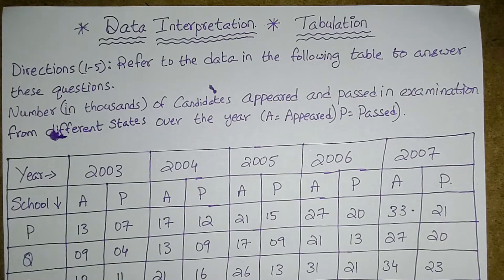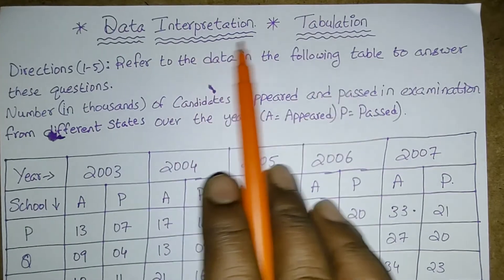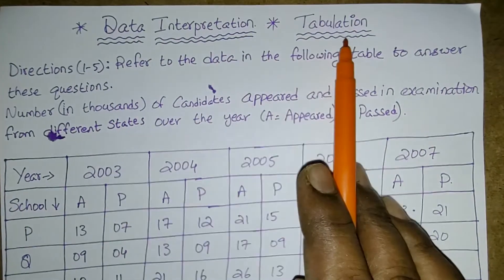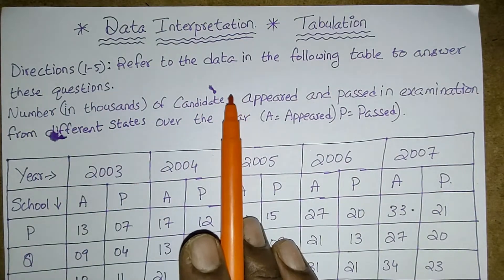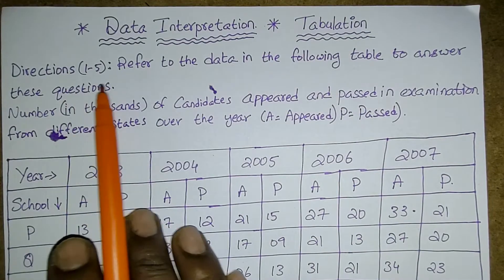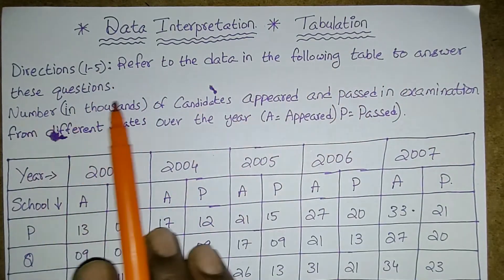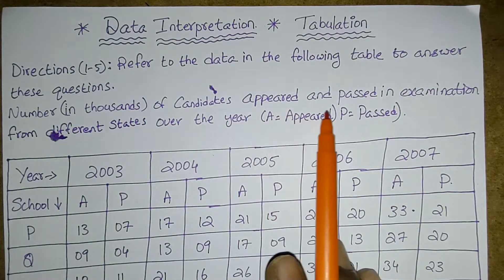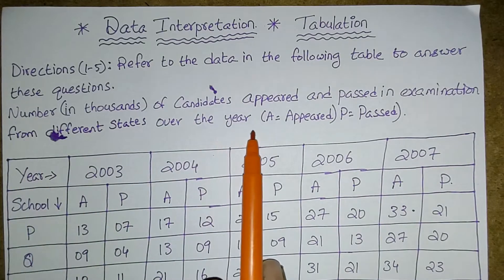Now we will start today's class. The heading states 'Data Interpretation' and this is the tabulation. The question starts in this way — Directions 1 to 5: refer to the data in the following table to answer these questions. Number in thousands of candidates appeared and passed in examination from different states over the years.